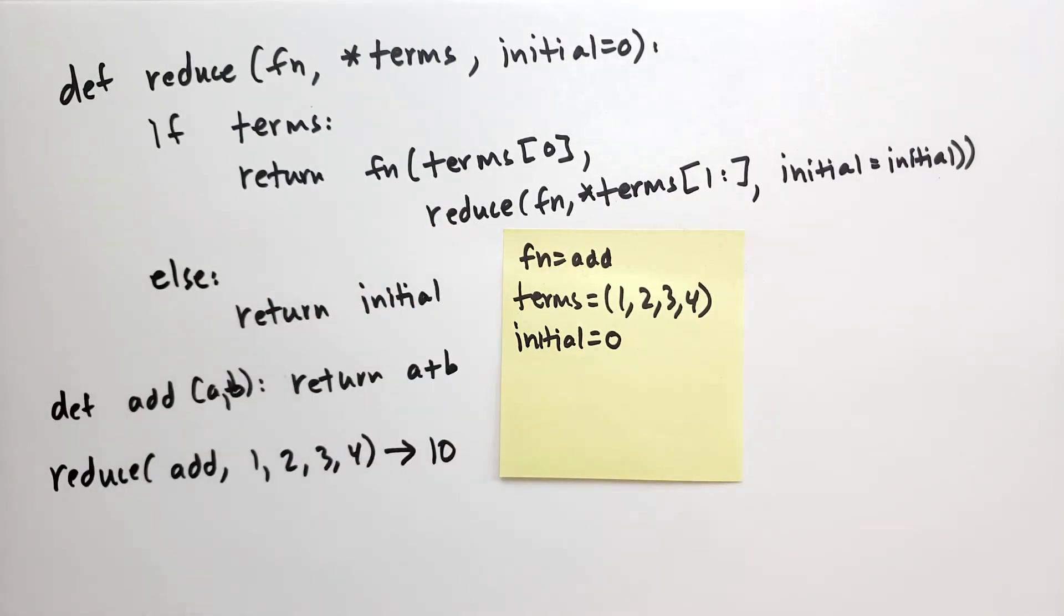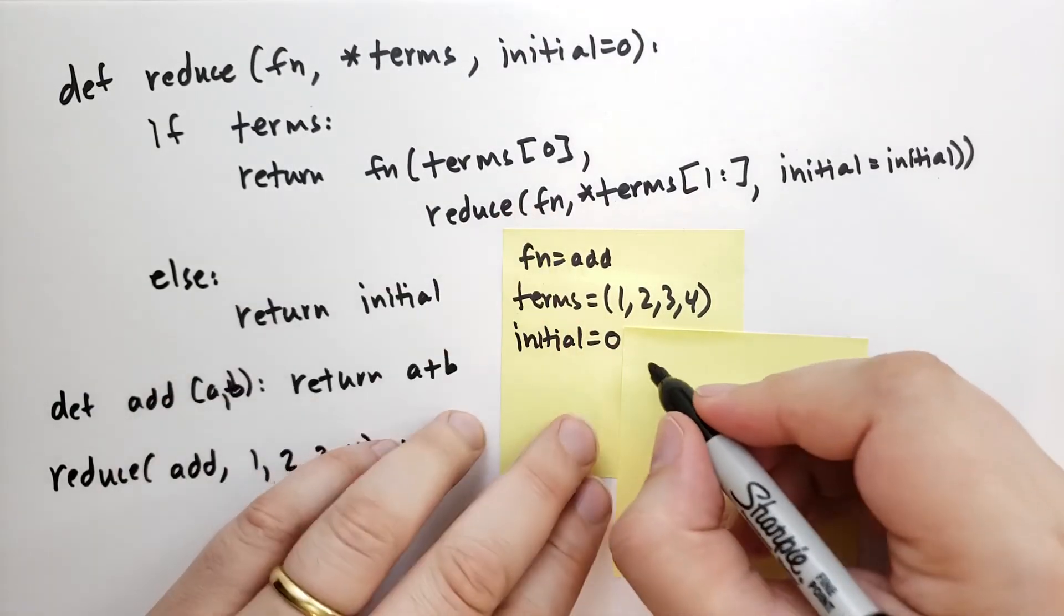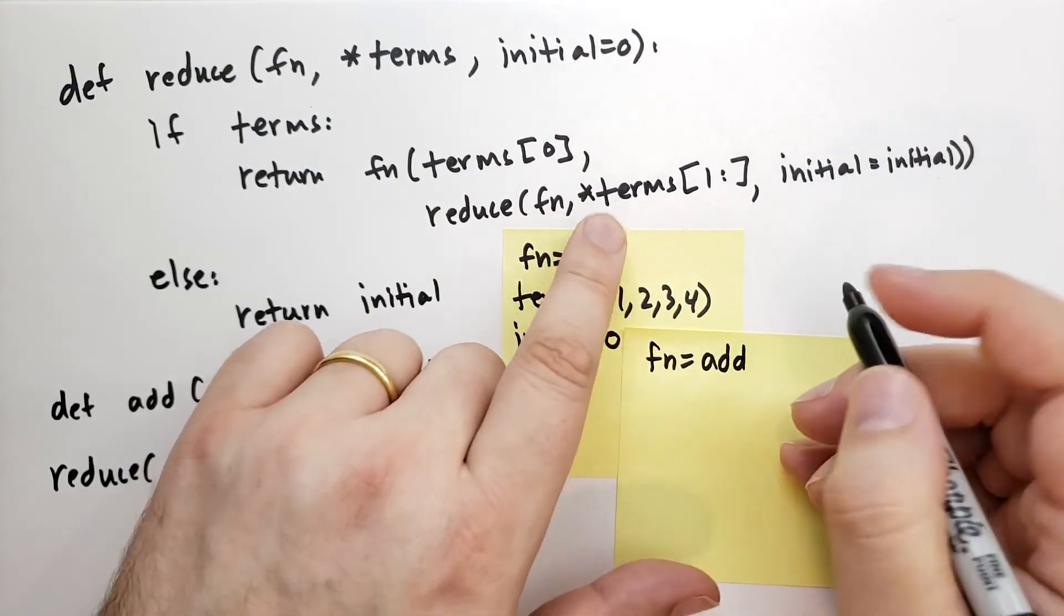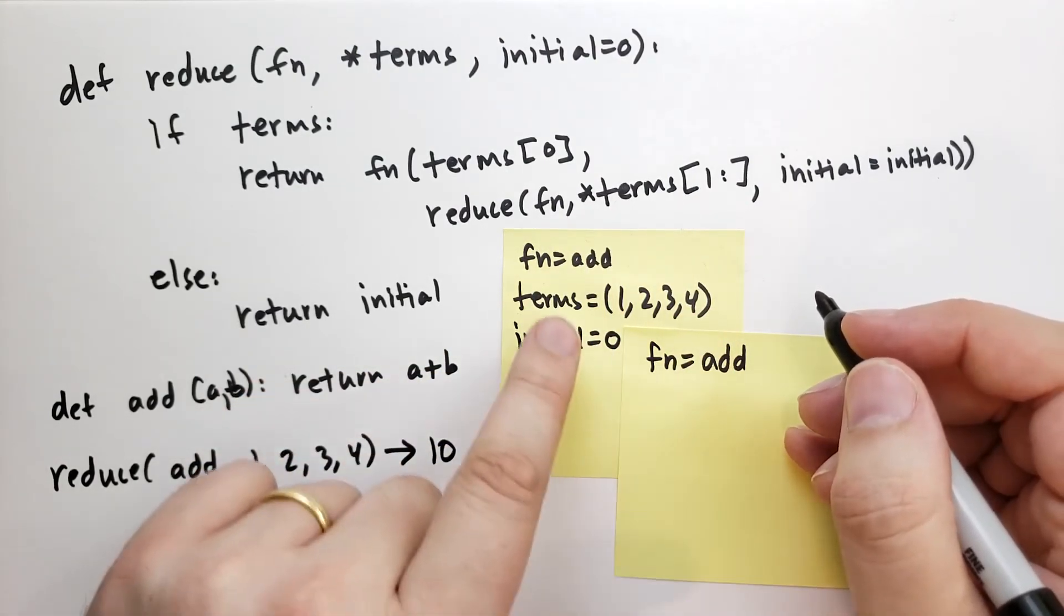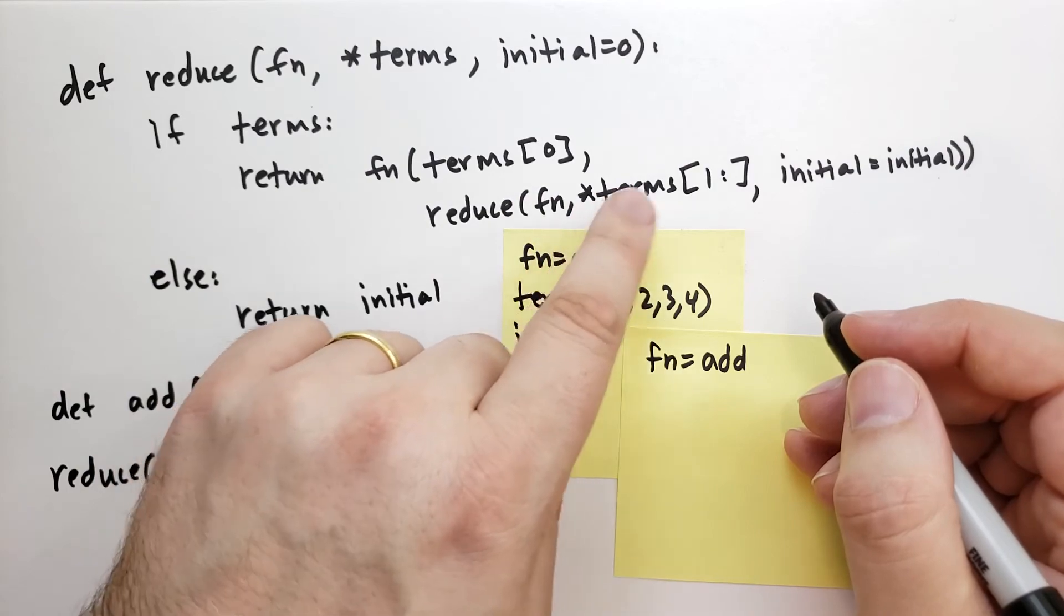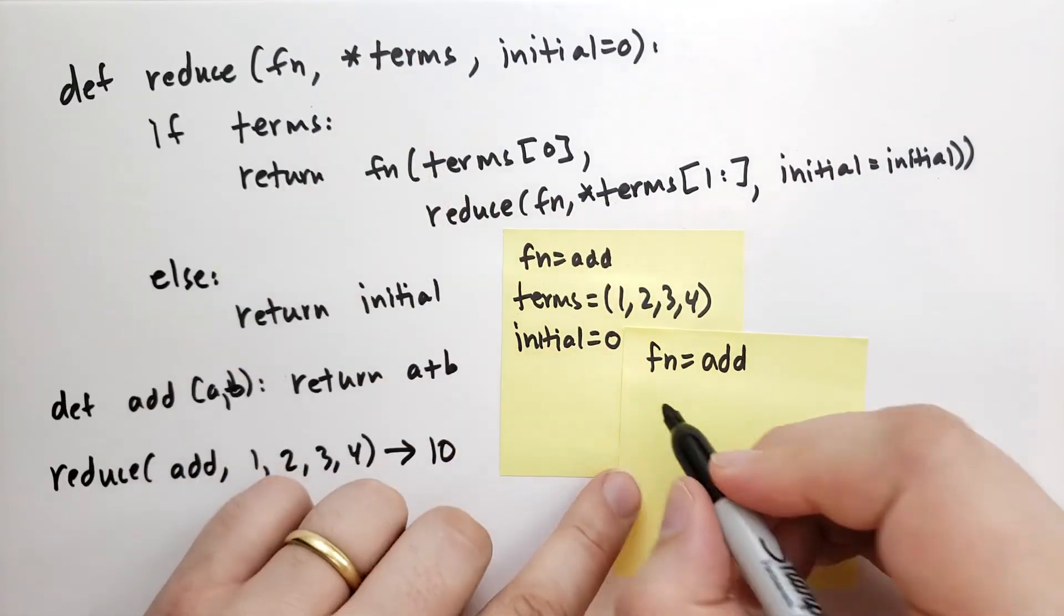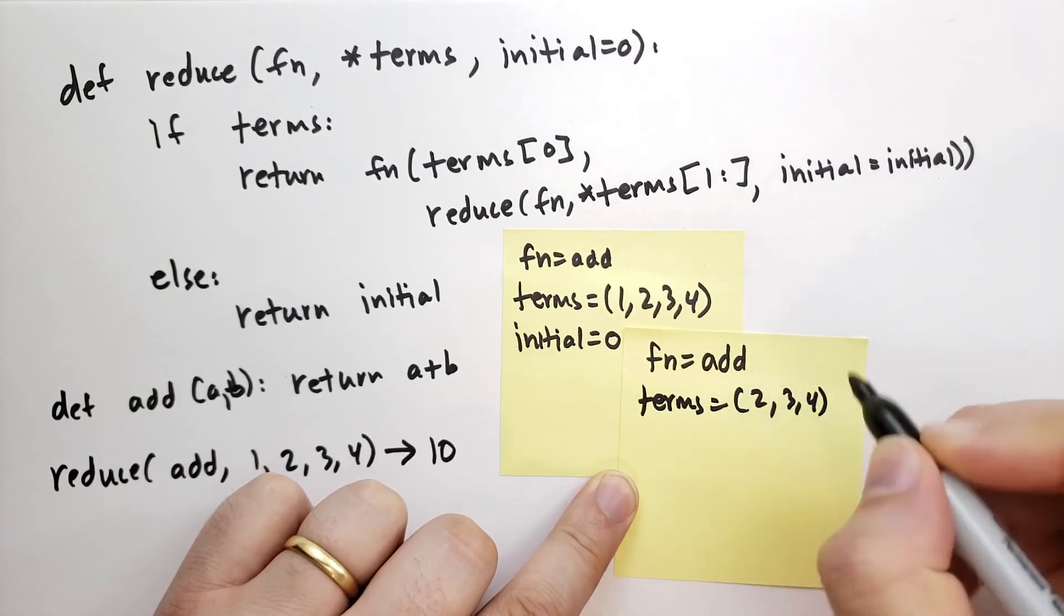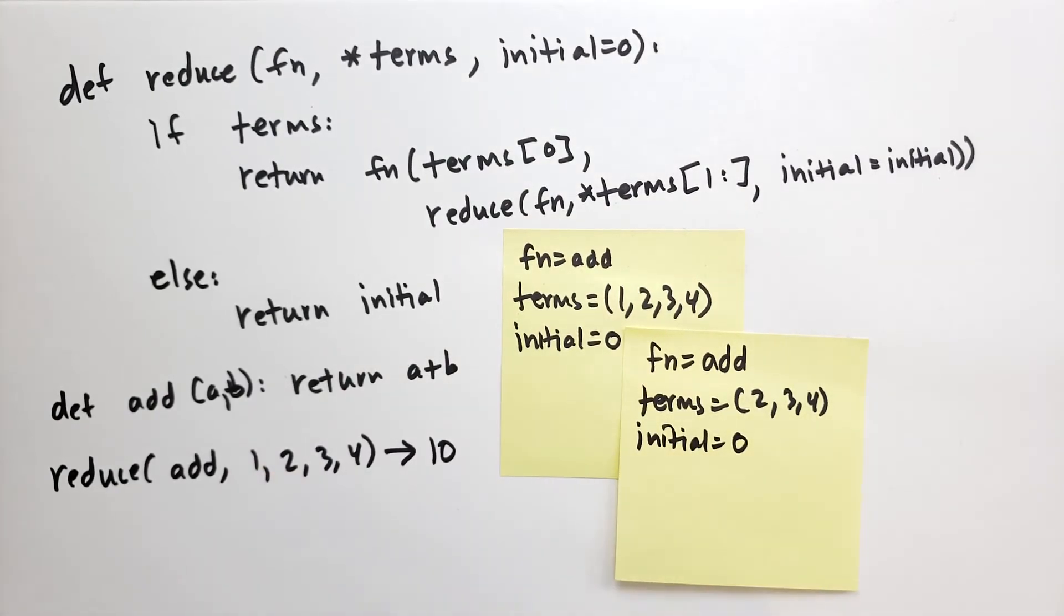So the next call of reduce, the function is the same function, so it's add. And now we're taking the terms starting with 2, 3, 4. So we're calling this reduce function with add, 2, 3, 4, initial=initial. So terms is going to soak up 2, 3, 4, and the initial is going to be equal to 0. If terms, and indeed there are terms, so we're going to do this again.